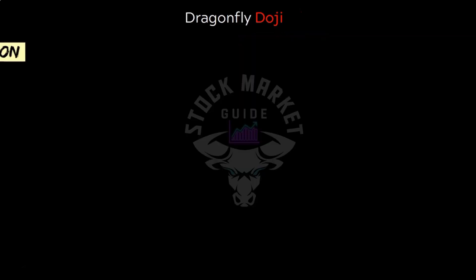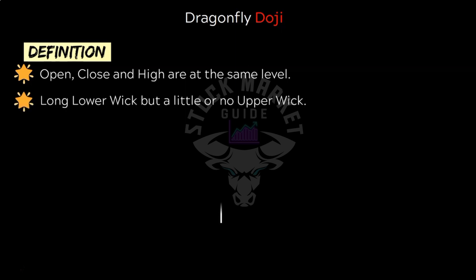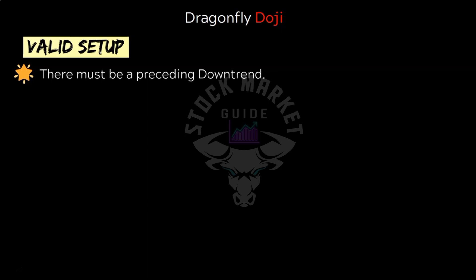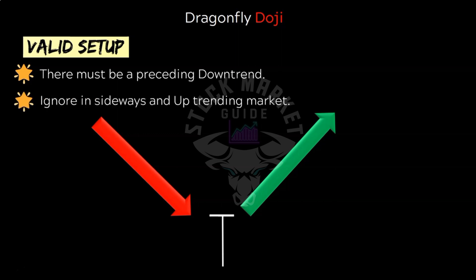Next let's see dragonfly doji. The dragonfly doji is formed when the open, close, and high are at the same price during an average or larger daily range. It has a long lower wick but no upper wick. Dragonfly doji formation is very effective at the bottom of a trend and often results in market reversals. Whenever the trend is down and this doji forms, consider it a trading signal, but ignore it in sideways and uptrending markets.